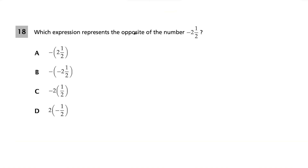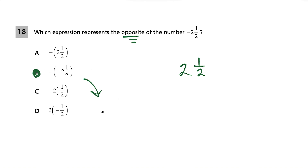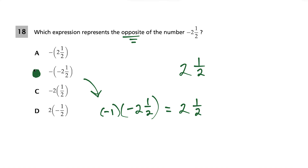Question 18: which expression represents the opposite of negative two and a half? When looking for the opposite, we just change the sign — so the opposite would be positive two and a half. But none of the answers show that directly. The way to write the opposite of a number is to put a negative sign in front of it, so choice B is our answer. Negative times negative two and a half gives positive two and a half, which is the opposite.